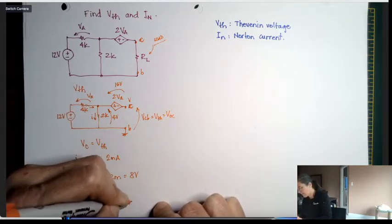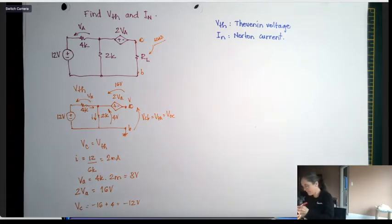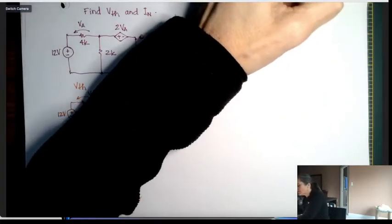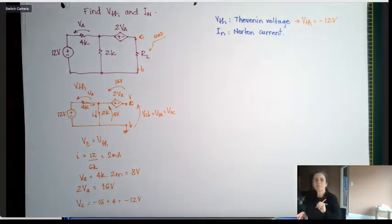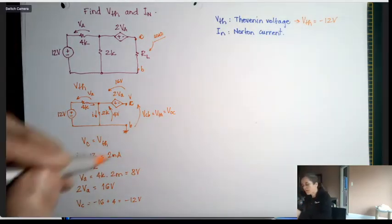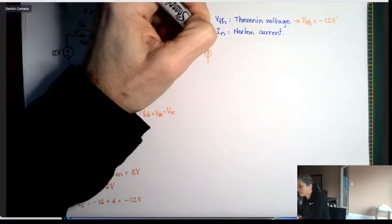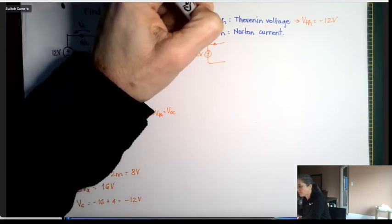It'll be minus 12 volts. That's the VTH. Now in the next video I'm gonna find IN, but I'm gonna write here Thevenin voltage VTH is minus 12 volts. If I were drawing the Thevenin equivalent, it would have been with the plus on the top and here's 12 volts.